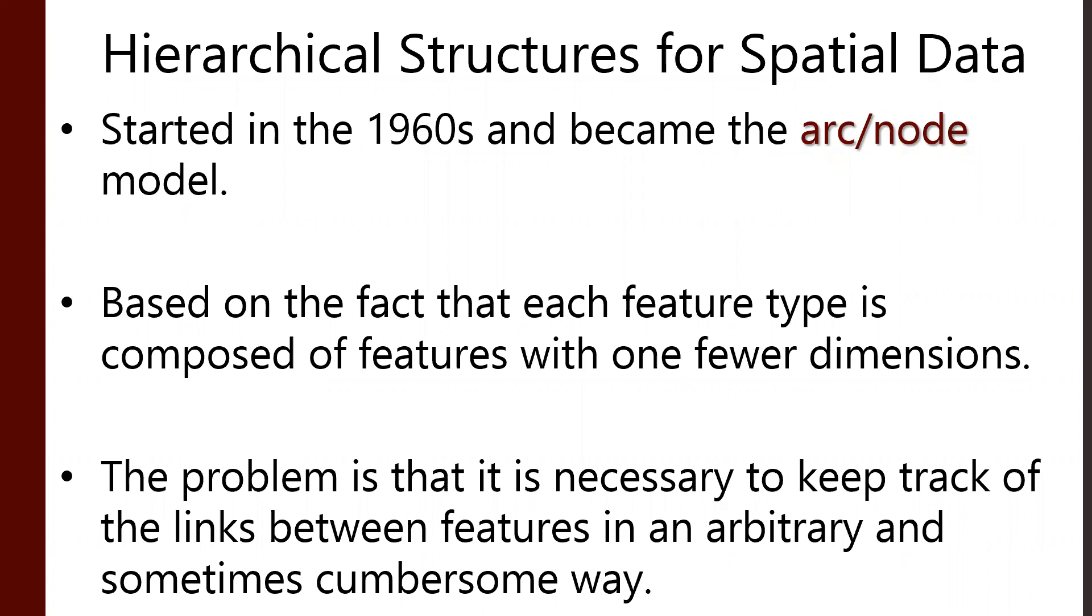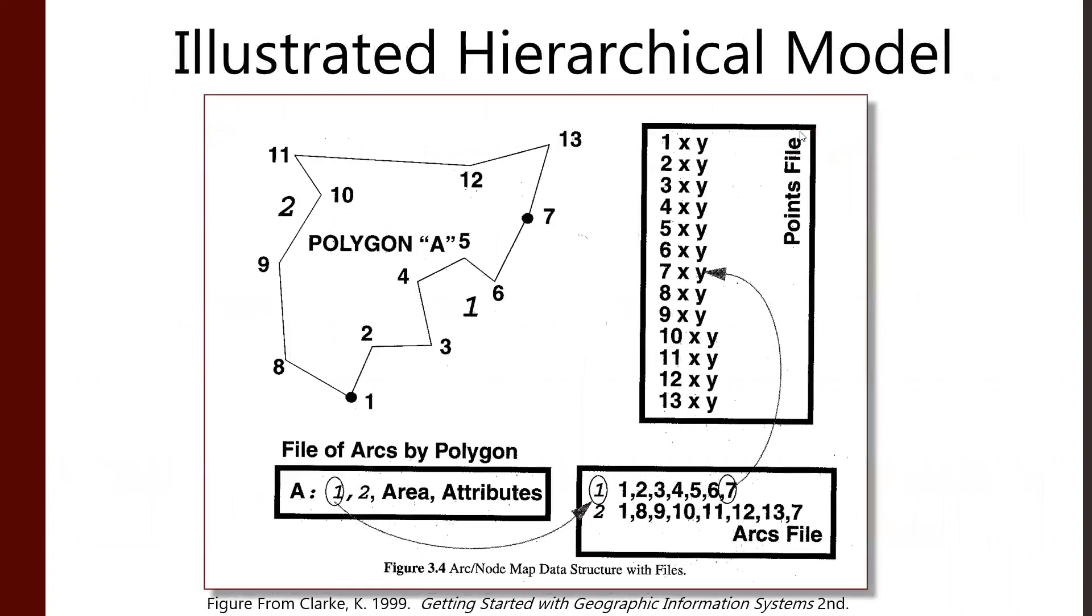We had to figure out how to keep track of links between features. This eventually led us to the arc node model, where we have arcs, which are relationships between different points. Those points are nodes, and then polygons are simply agglomerations of arcs.